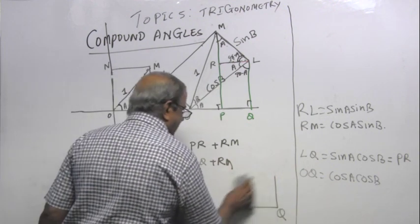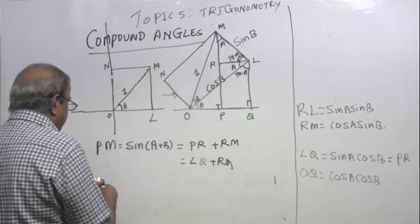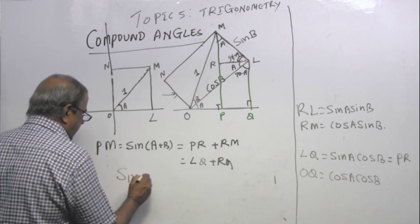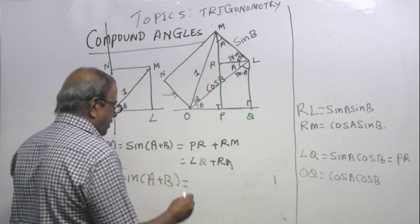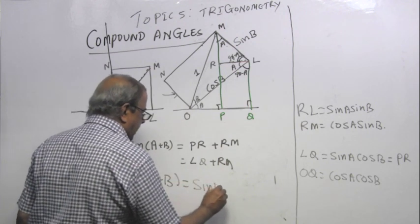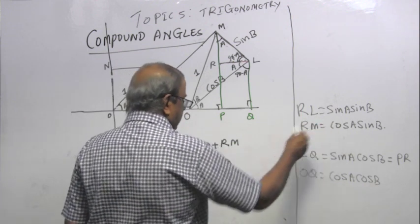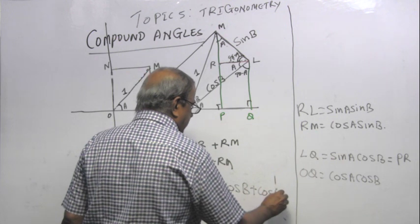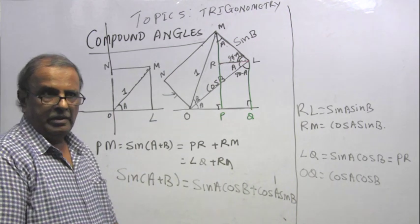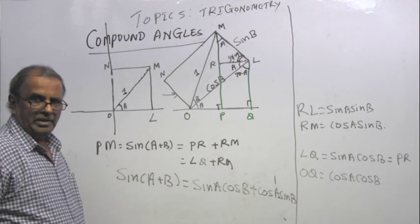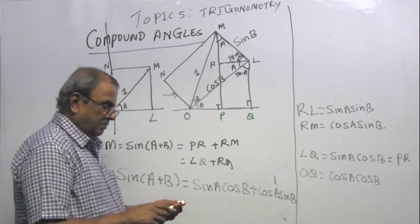Can you see the formula coming out there which you have seen in your formula book? Therefore I can say sin of A plus B is equal to LQ is sin A cos B plus RM, RM is cos A sin B.